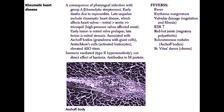Valve involvement is mitral most common, followed by aortic, followed distantly by tricuspid — the high-pressure valves are affected the most. The earliest lesions seen with rheumatic heart disease are mitral valve prolapse, and the latest lesion seen is mitral stenosis.